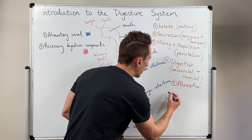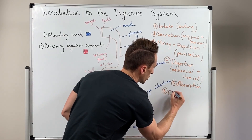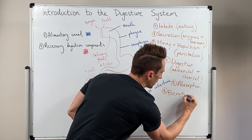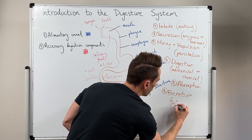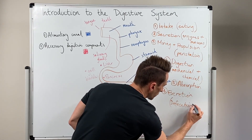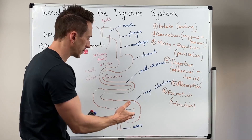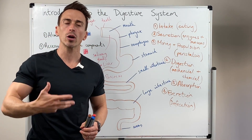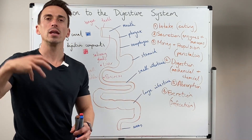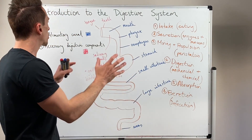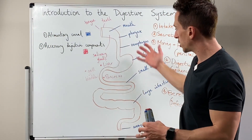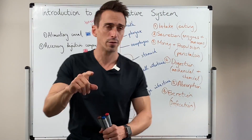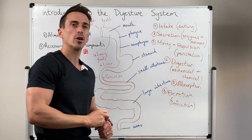Number six, the final function, is excretion — which is defecation. What we are excreting from the body at the anus is going to be indigestible products or substances that we no longer require. That's the final stage of the functional processes of the digestive system. So what we've gone through here is we've broken the digestive system into the alimentary canal and the accessory structures. We'll be talking more about this in detail in future videos covering all the different functions of the digestive system.